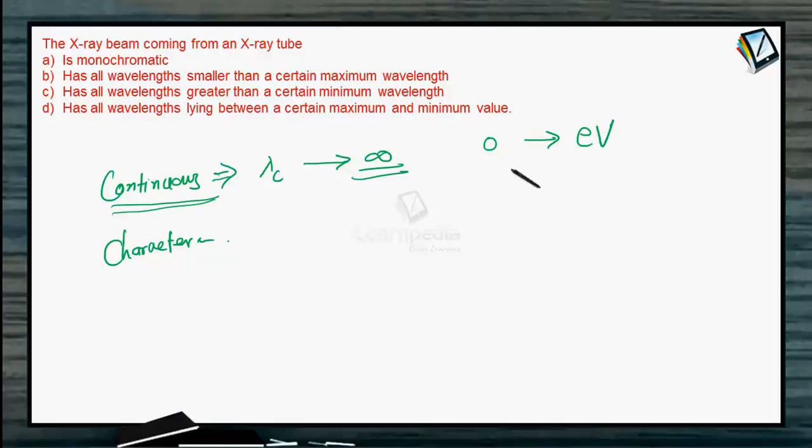The energy range from zero up to eV is being used to create the continuous x-ray photon. Zero energy will correspond to the maximum wavelength, which is infinite. So there is a cutoff wavelength.